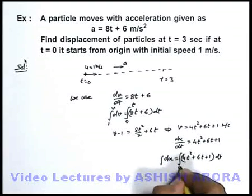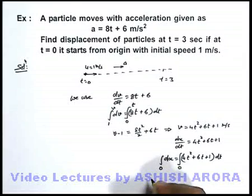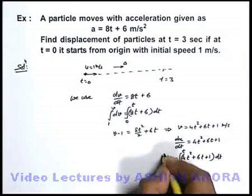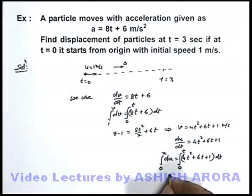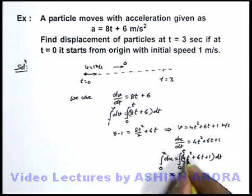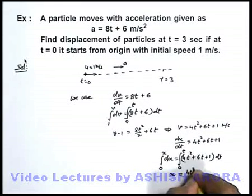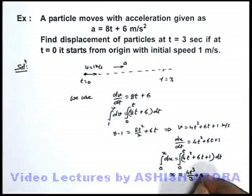With the relation that at t equal to 0 particle position was 0, because initially position is zero, and at a general time t particle is at position x. So on integrating we get the value of x is equal to 4t³/3 + 3t² + t.